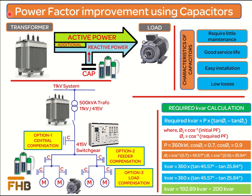The most commonly used method in industry for power factor correction is the installation of power factor correction capacitors. These capacitors supply positive reactive power to the system, partly or completely neutralizing the effect of negative reactive power demand of the load. With the supply of positive reactive power, the power factor improves and additional kVA capacity is freed in the installed equipment. Power factor correction capacitors require less maintenance, have a good service life of many years, are easy to install, and have low losses.